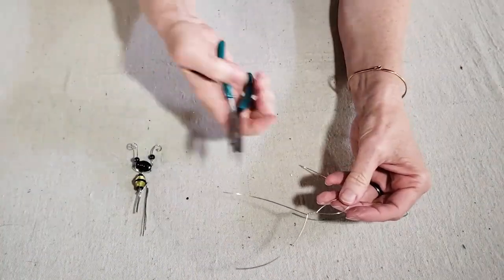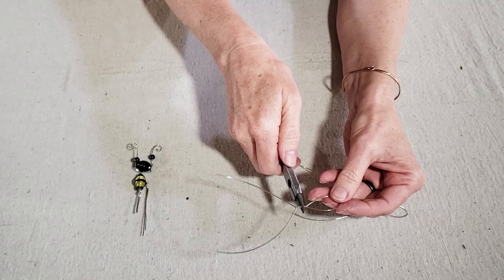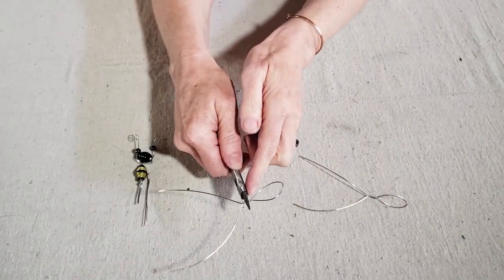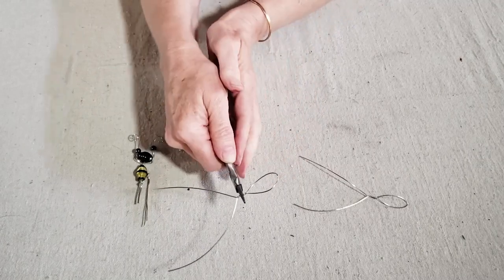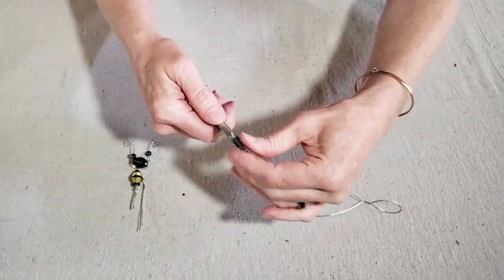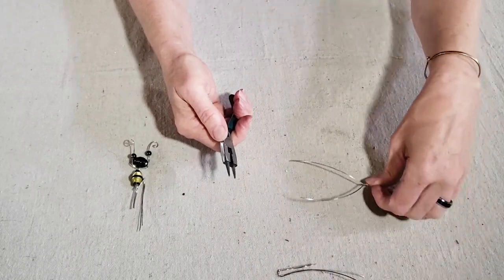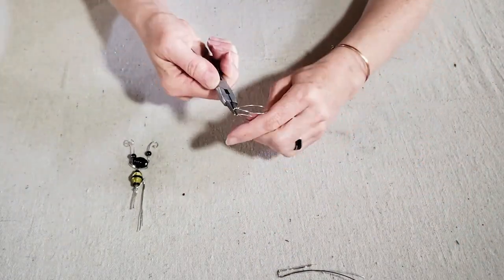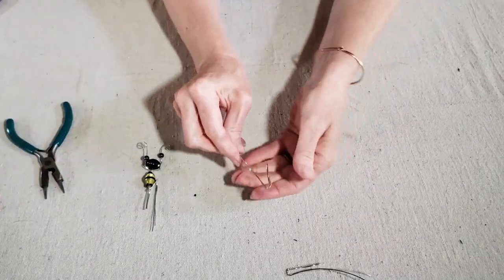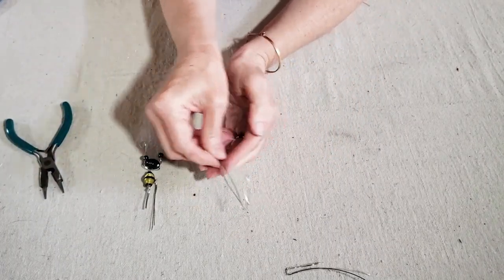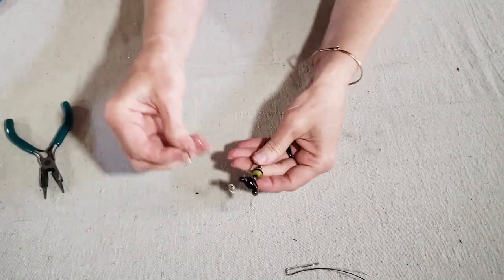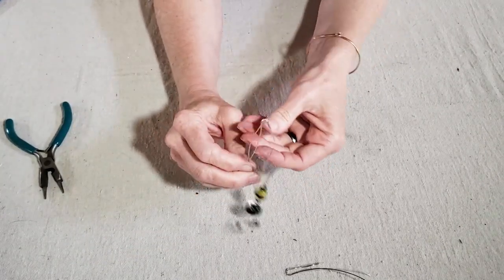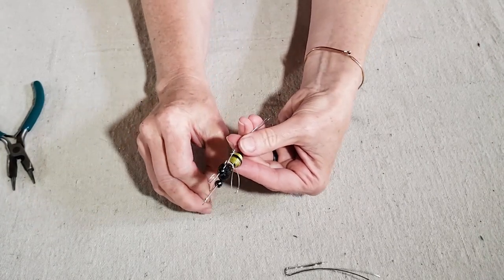The next thing I'm going to do is I want to bend my wire right in the middle of my twists here. And I'm just going to bend them over the barrel part of my jewelry pliers here.